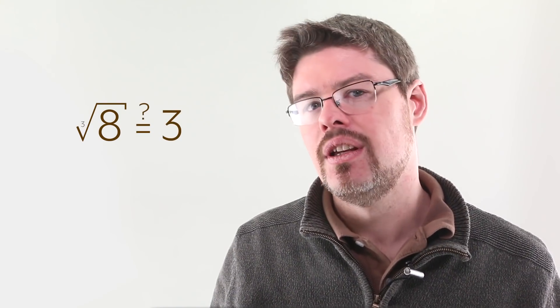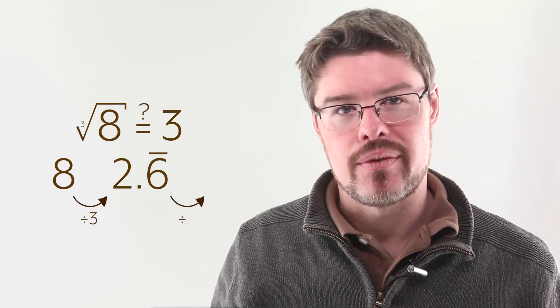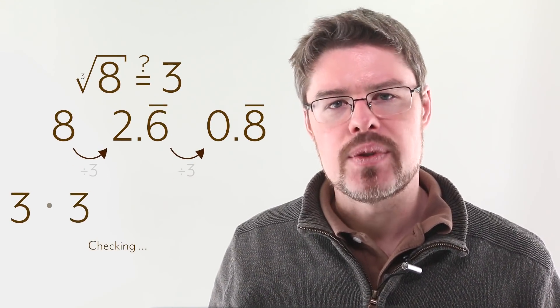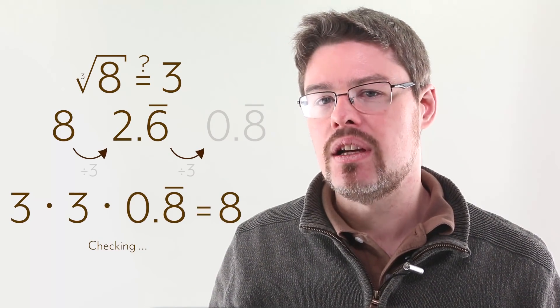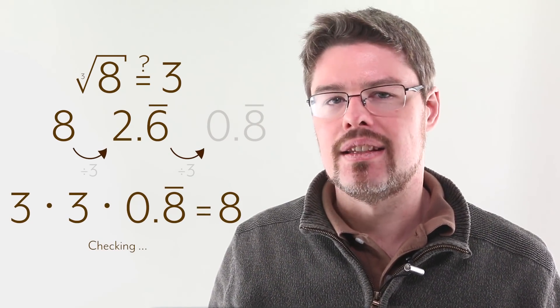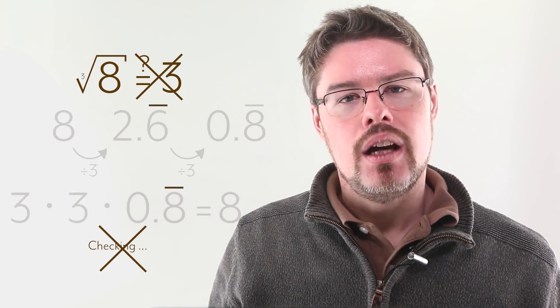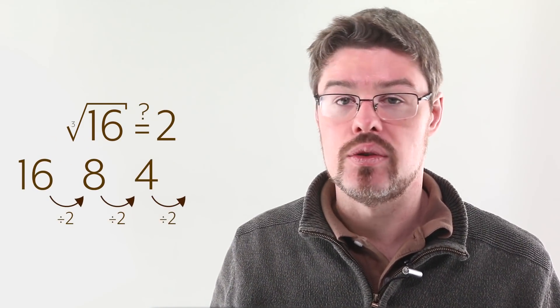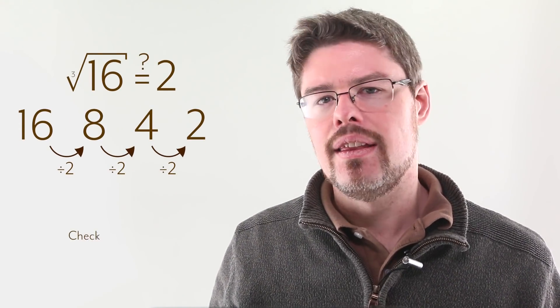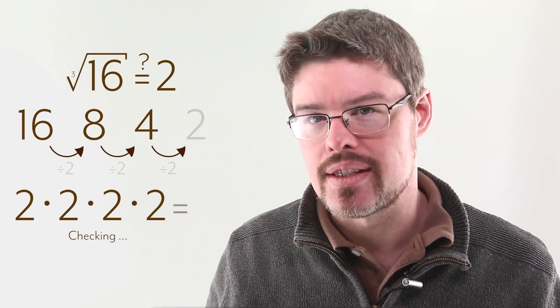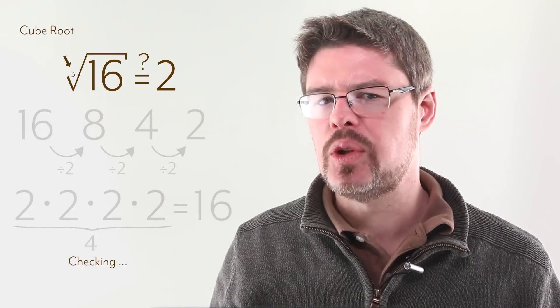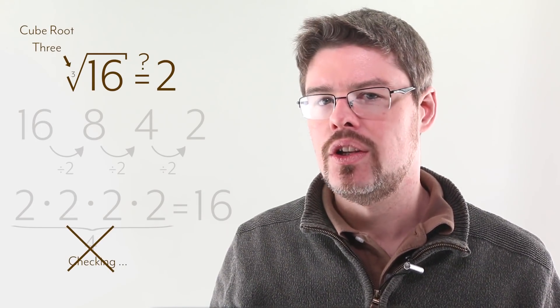But what would happen if we guessed wrong? Let's guess 3 for the cube root of 8 — incorrect, but illustrative. 8 divided by 3 is 2.6 repeating, and that divided by 3 is 0.8 repeating. We didn't land on 3 — so this isn't right. Another way we might guess wrong is given in this example: consider the cube root of 16, and guess 2. 16 divided by 2 is 8, divided by 2 is 4, divided by 2 is 2. We landed on 2, but this says 2 times 2 times 2 times 2 is 16 — that's four 2s. But this is a cube root, meaning we multiply our guess by itself three times, not four. So this guess isn't right.